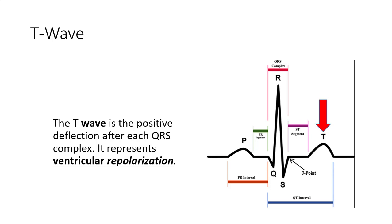The final wave of the heartbeat is the T wave. It's a positive deflection at the end of each QRS complex, and it shows that the ventricles are ready to fire again — what we call repolarization.